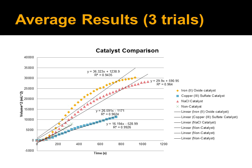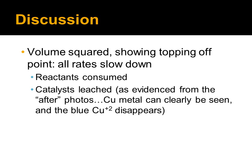For our average results, we did three trials of each of the varying catalysts. Our results from the experiment demonstrated a clear distinction between which catalysts were the most effective, which is iron 3 oxide, as outlined in the yellow dotted line. For most of the catalysts, the topping off point was roughly 500 seconds, after which the rates began slowing dramatically.